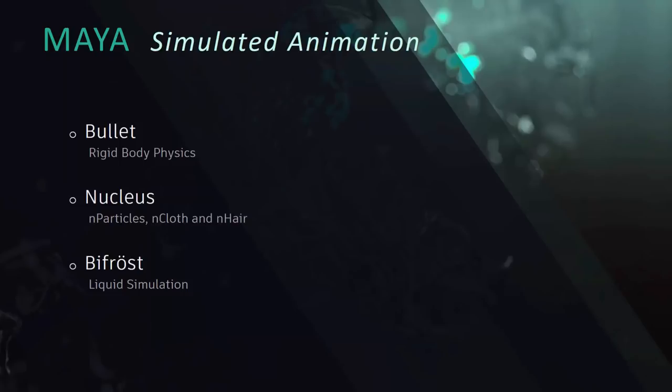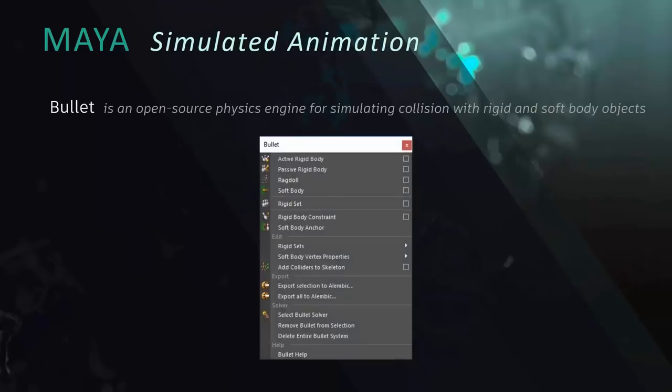Another thing we're going to talk about is simulated animation. MASH is procedural animation, but simulated animation typically means physics-based animation. We've got a few different systems for this: Bullet Physics, which is primarily a rigid body solver — it does soft bodies as well, but it's primarily used for rigid; Nucleus, which has a variety of different uses; and Bifrost, which is mainly focused around liquids. Bullet itself is an open source engine available via a plug-in that ships with Maya, though it doesn't load by default. Just go to the plug-in manager, toggle it on, and this menu set will show up.